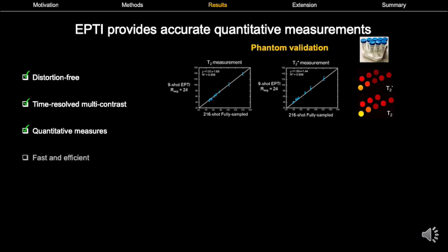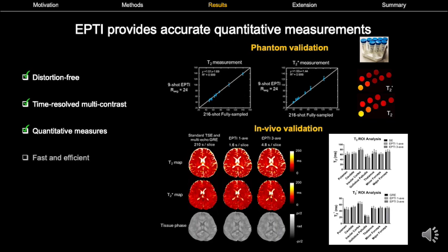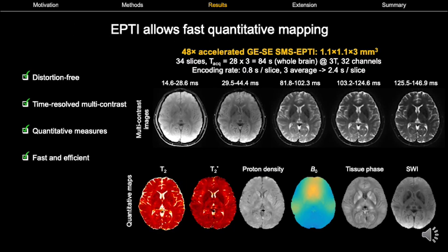Using EPTI's signal evolution information, we can obtain quantitative measurements such as T2 and T2 star. We performed both phantom and in-vivo experiments and successfully validated its ability to get accurate T2 and T2 star measurements in much shorter acquisition time. EPTI allows rapid quantitative mapping using a 48-fold accelerated gradient and spin echo SMS EPTI at 1.1 x 1.1 x 3 mm for whole brain coverage. One average of EPTI takes only 28 seconds with an encoding rate of 0.8 seconds per slice. Acquiring three averages to boost SNR results in a total acquisition of 84 seconds for all multi-contrast and quantitative maps.